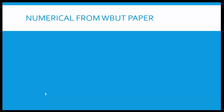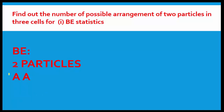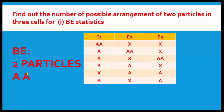Now we take the same number of particles and cells but for Bose-Einstein statistics. In Bose-Einstein statistics, particles are indistinguishable, so we name both particles as 'a, a'. The second point is that Bose-Einstein particles do not follow Pauli's exclusion principle, which means the two particles in a given cell can stay together or they can stay individually. We still have three cells: E1, E2, E3, and two particles.